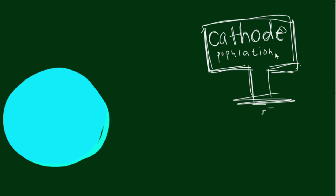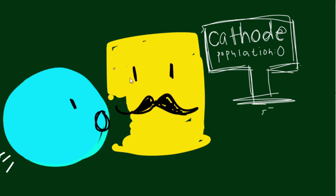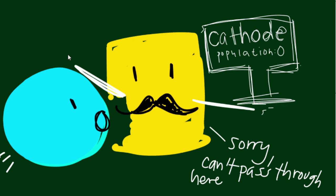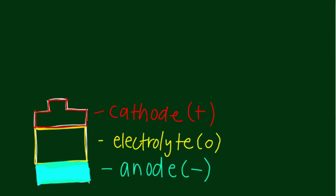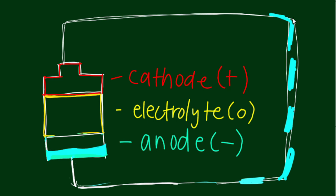To prevent electrons from traveling directly from the anode to cathode within the battery, the electrolyte acts as a barrier. Only when a circuit is closed, meaning a wire connects both ends of a battery, can electrons flow from the anode to cathode.